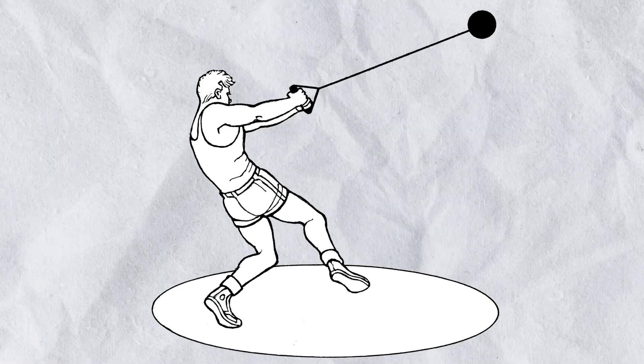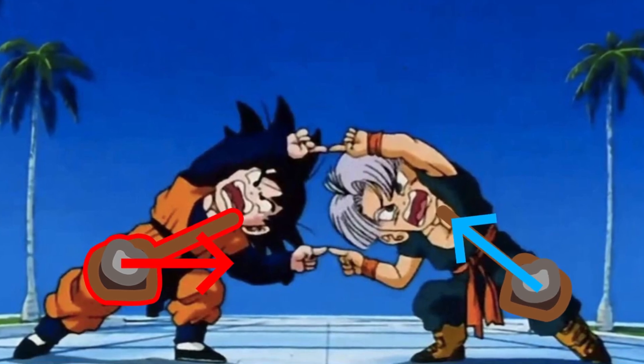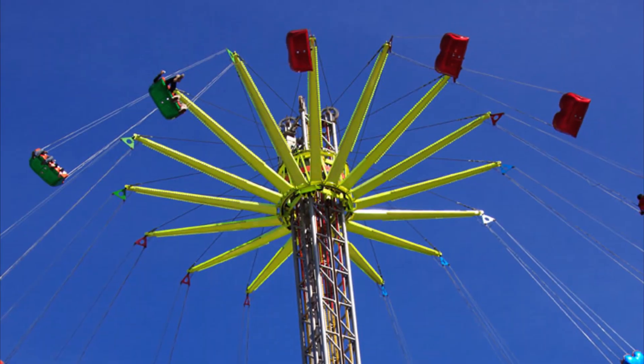This inward pull is the centripetal force. The combination of these two things—the rock's forward motion and the rope's inward pull—is what creates the circular path.